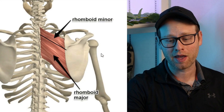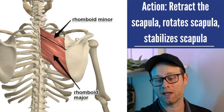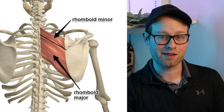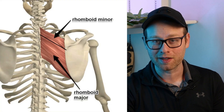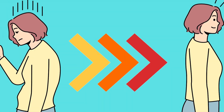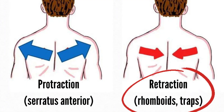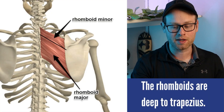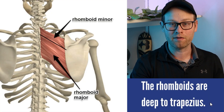Next up, we're talking about the rhomboids — rhomboid minor and rhomboid major. These guys retract the scapula, rotate the scapula, and stabilize the scapula. Like the trapezius, they're also blamed for a lot of upper and middle back pain, but more often than not they're more of a victim than an outright cause. We really just need to get people to assume better posture and retract those shoulder blades down and back, getting out of that forward rounded posture. The rhomboids are actually deep to the trapezius, running right underneath part of it.